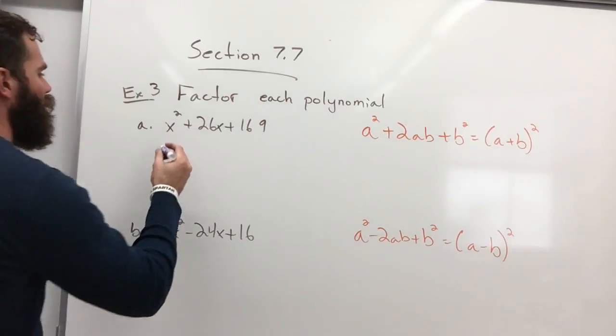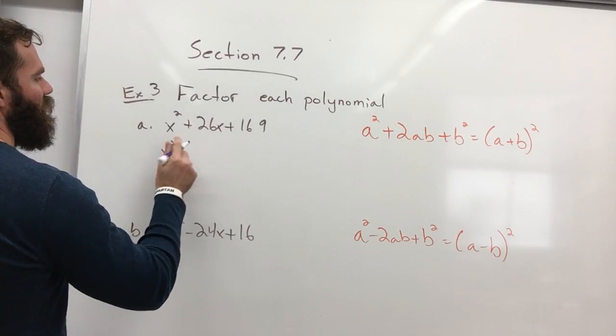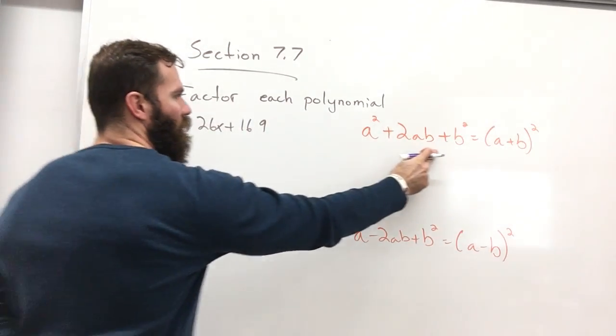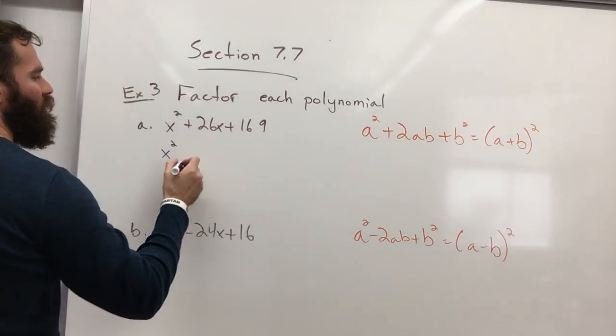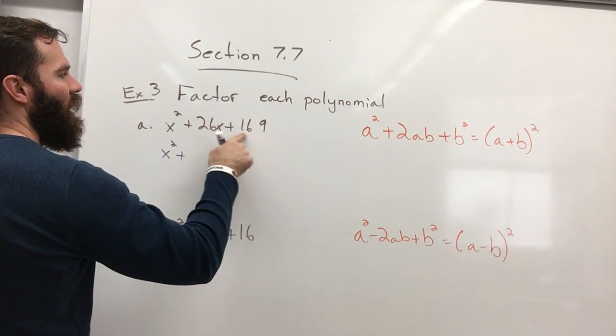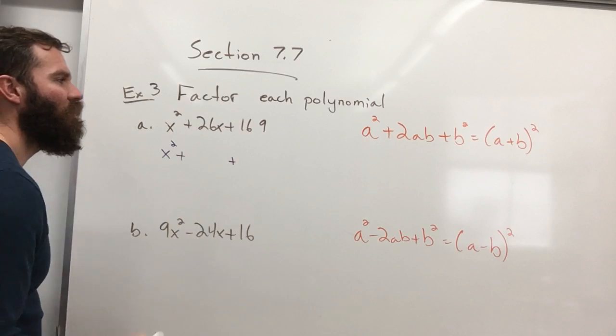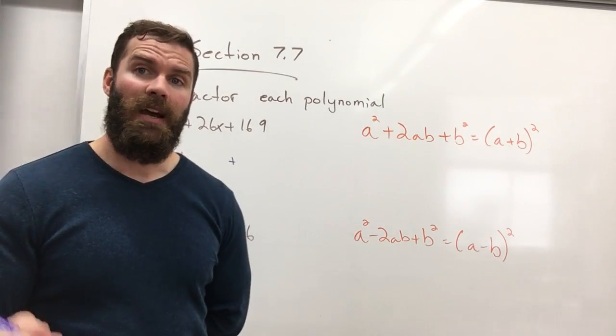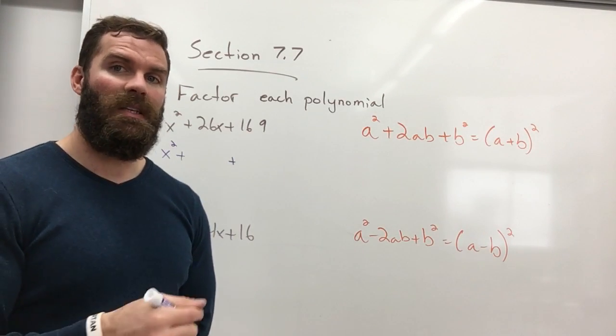The first thing we need to do is get this to look like this, sort of. So basically, 169, you need to find a number times itself gives you 169.